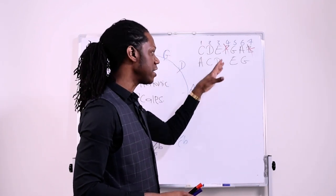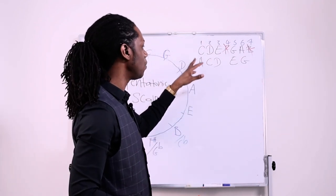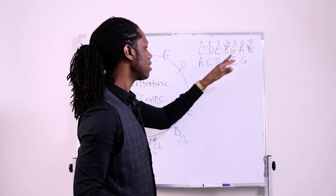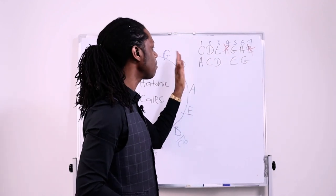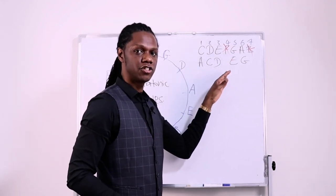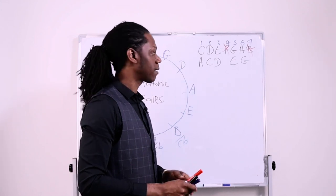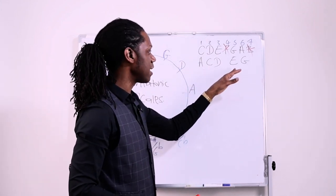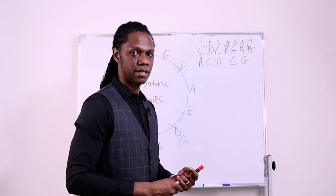To make it minor, all you do is take the last note within the major pentatonic scale and you make that the root. So A, then we have C, D, E, then we have G. Simple way.